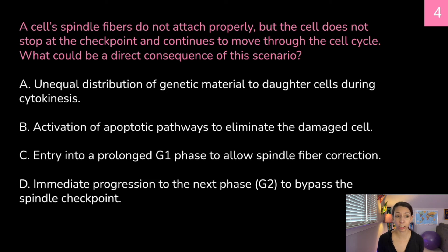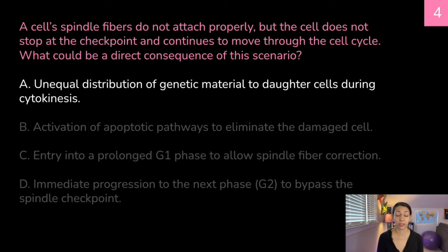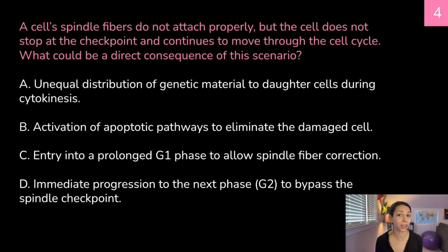One more for today. A cell's spindle fibers do not attach properly, but the cell does not stop at the checkpoint and continues to move through the cell cycle. What could be a direct consequence of this scenario? A, unequal distribution of genetic material to daughter cells during cytokinesis. B, activation of apoptotic pathways to eliminate the damaged cell. C, entry into a prolonged G1 phase to allow spindle fiber correction. Or D, immediate progression to the next phase, G2, to bypass the spindle checkpoint. Think about it. Well, the most direct consequence is going to be A, unequal distribution of genetic material to daughter cells during cytokinesis. If it's bypassing that checkpoint, we're probably not going to get activation of apoptosis. We're not going to go back into G1 either to fix the spindle fibers. And the next phase is not G2. It would divide and then restart the cell cycle again. So correct answer is A.